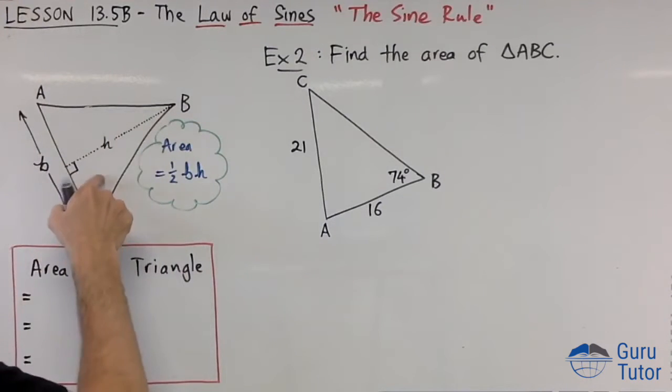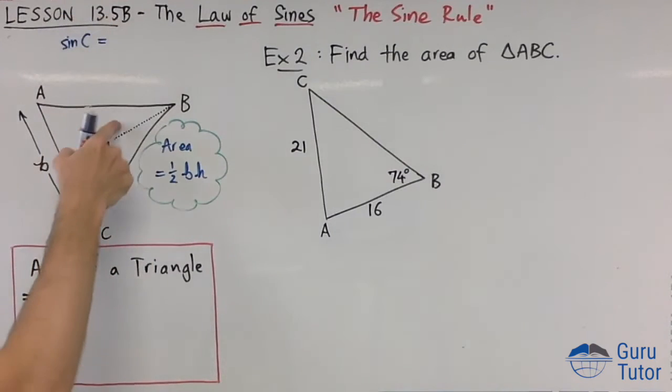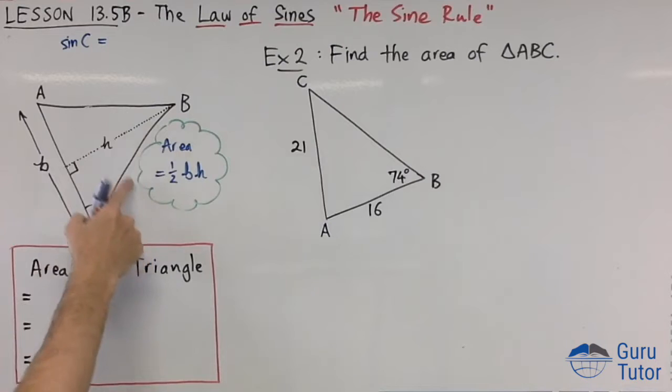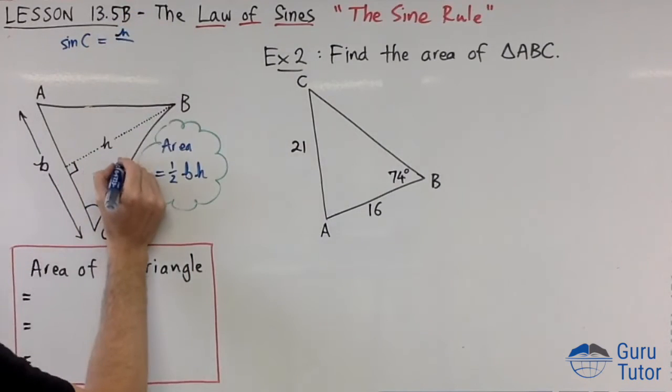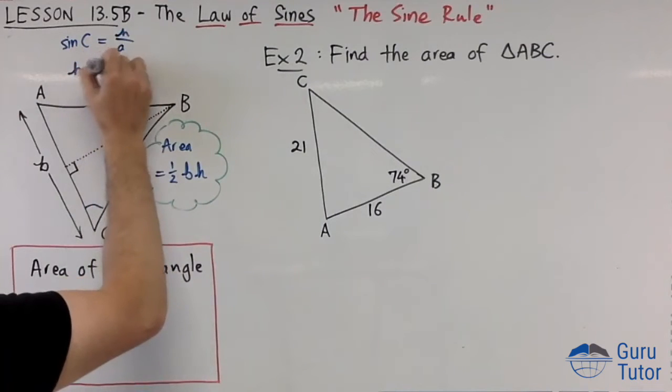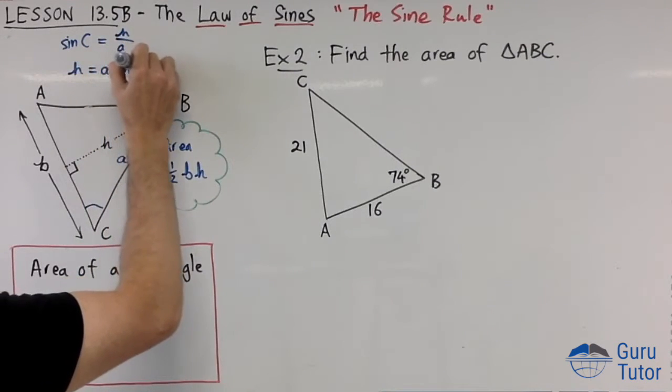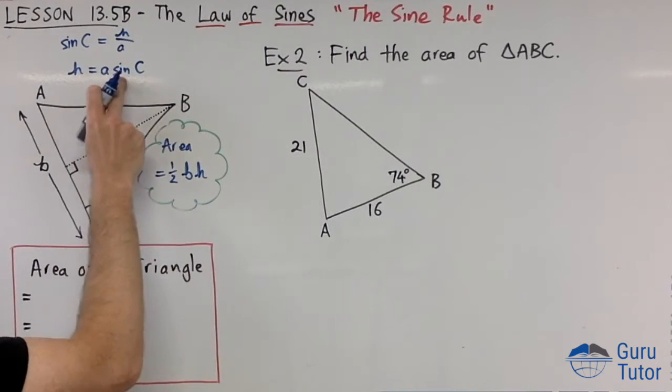Let's do SOHCAHTOA in this triangle here. What's sine C? Sine C is opposite over hypotenuse, h over a, so h equals a sine C. What I'm going to do is put a sine C in for h.